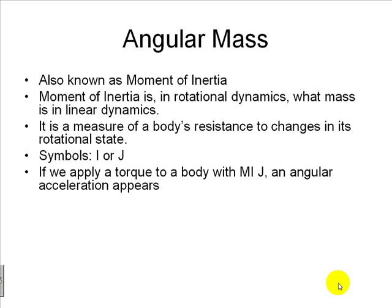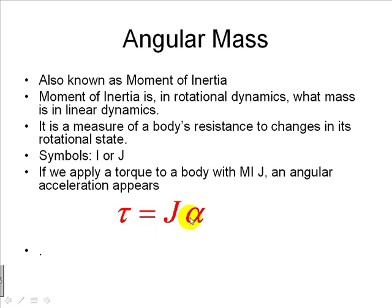If we apply a torque to a body with a certain moment of inertia J, an angular acceleration appears according to this expression. This is Newton's second law of dynamics applied to rotational motion. We apply a torque in newton-meters to a body with an angular mass J, and an acceleration alpha in radians per square second appears.